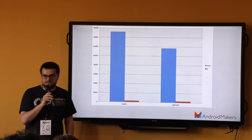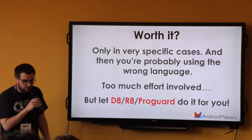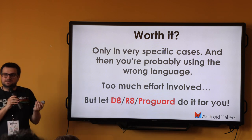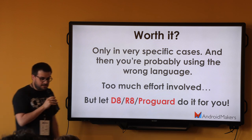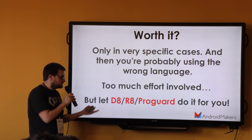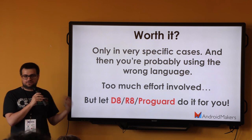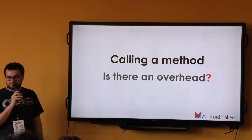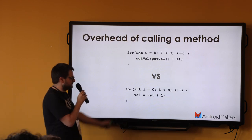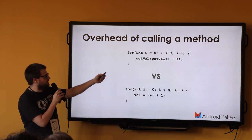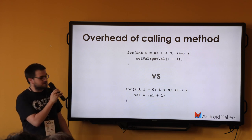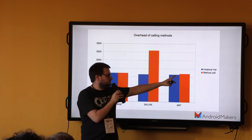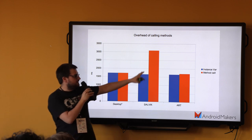Is it worth it? Only in very specific cases, and if this is one of those cases you're probably using the wrong language — you'd need to do it in C or native code. It's also too much effort and hard to maintain. Tools like ProGuard and R8 do some of this automatically — let those tools do it for you. Also, if you pay attention to the keynote, Chet mentioned a penalty on calling a method. Do you think there's a big difference between direct field access and using setters and getters? The penalty is on Dalvik. On desktop there's no difference. On ART it's significant, but on Dalvik it's a huge penalty.